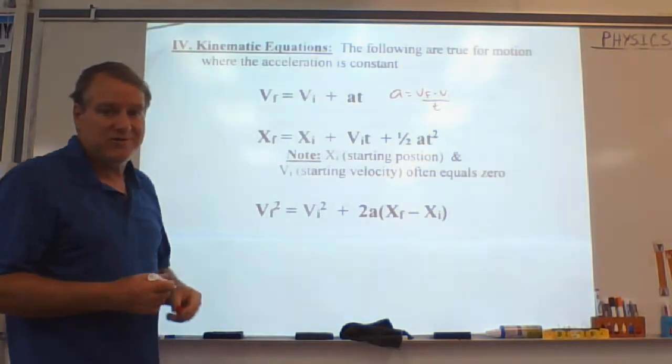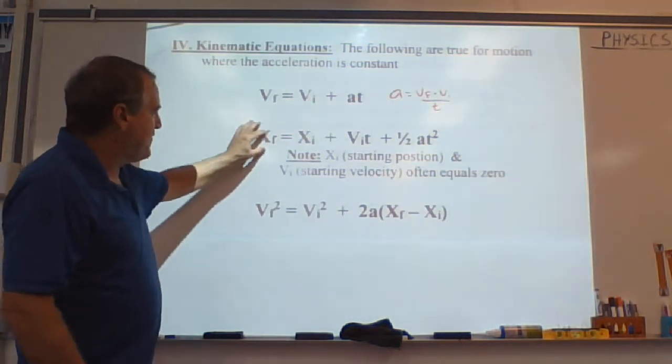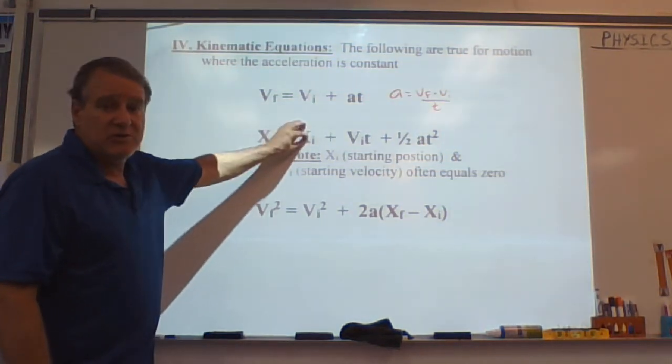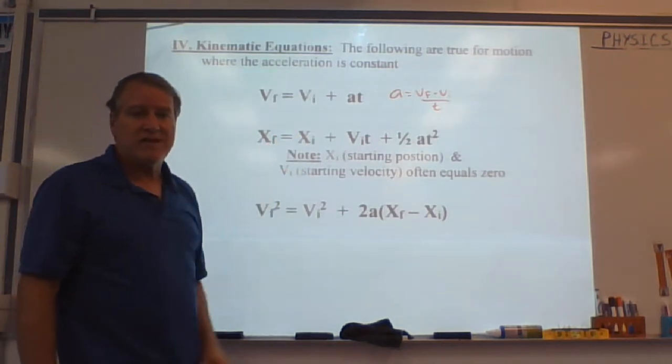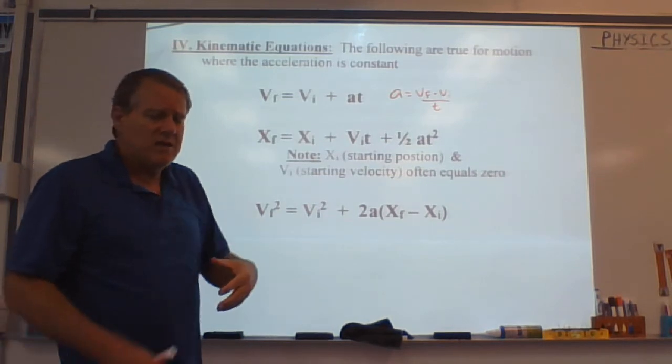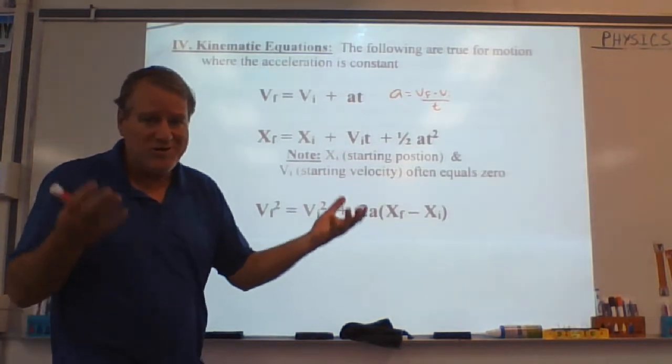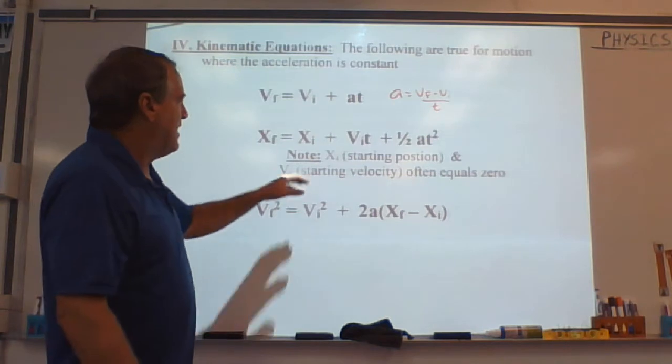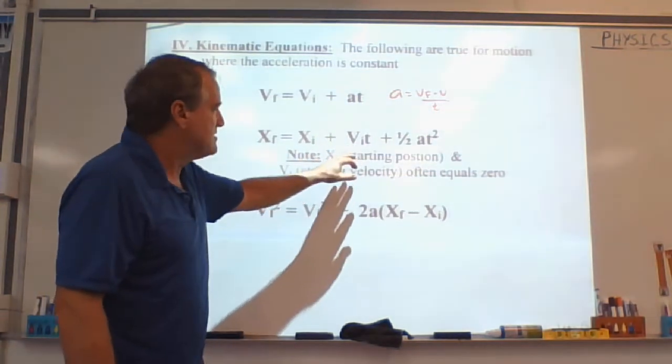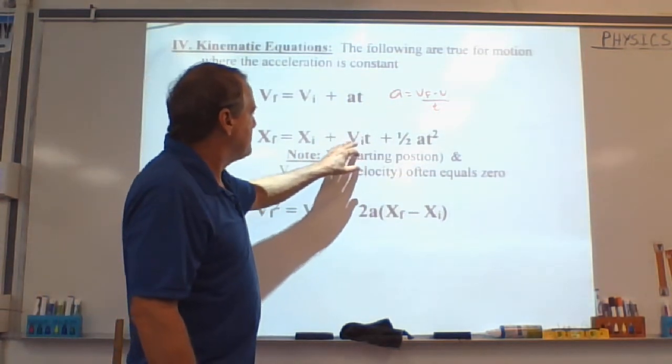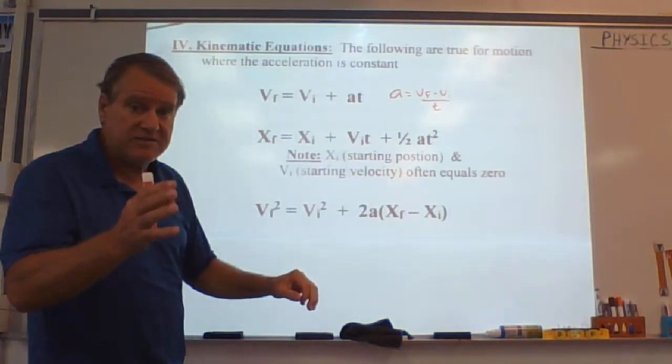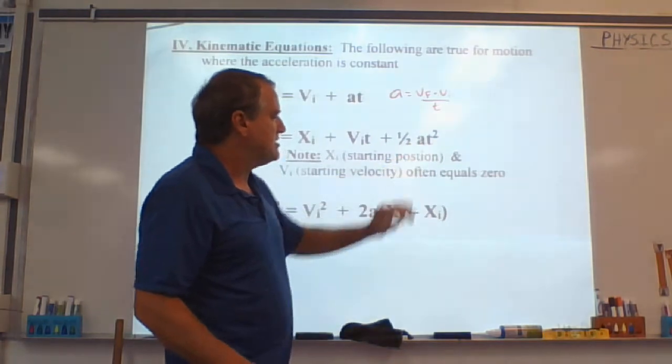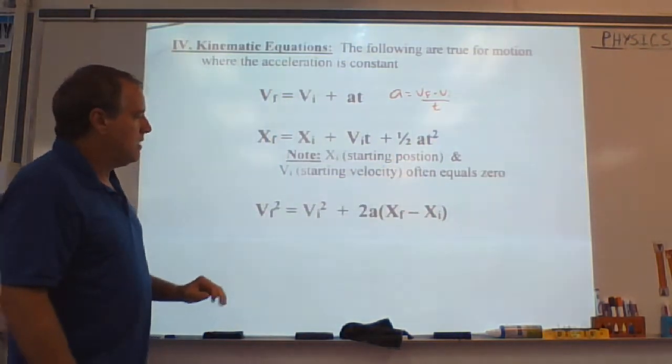The second equation is completely new. That says that the final position of an object is equal to its initial position, and typically XI is zero. 99% of the time it'll be zero. It's unusual to say, hey, starting at five meters, how far did I go? You know, why not just start at zero? The second part here is the VIT. That's your initial velocity times time. And the last part is 1/2 acceleration times time squared.